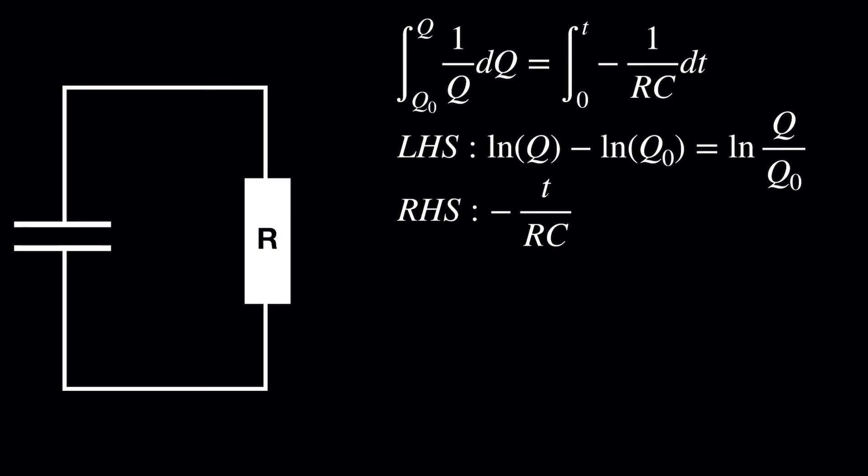Let's equate these expressions, and then using the definition of a logarithm, we know that e to the negative t over RC equals Q over Q0, therefore Q of t is equal to Q0 times e to the negative t over RC, just by multiplying by Q0 on both sides.